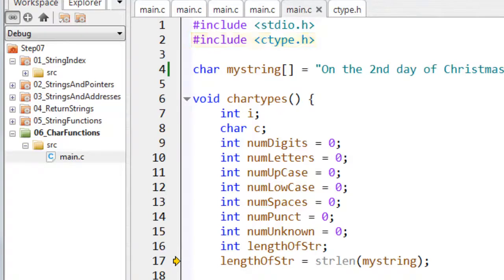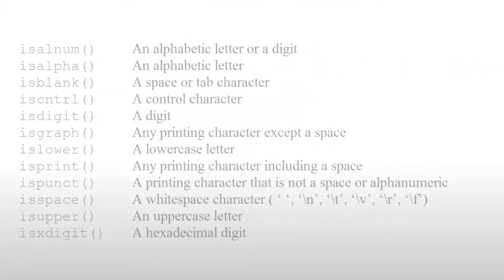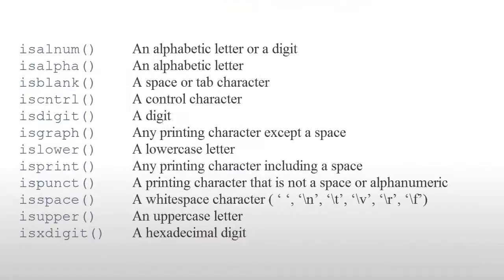Here I want to go over the most common char functions that you're likely to come across. Each of these functions takes a char argument and it returns a non-zero value representing true or a zero value representing false, so you can see if the function has succeeded or not.